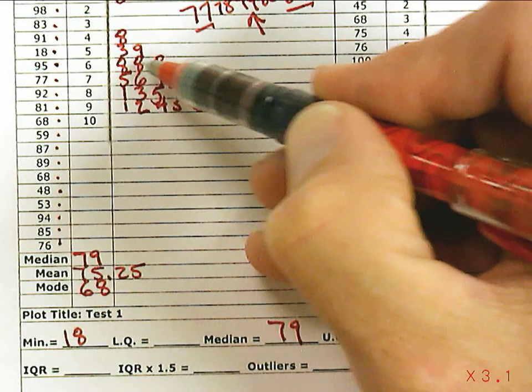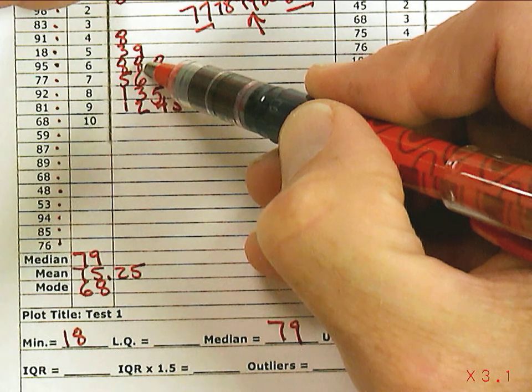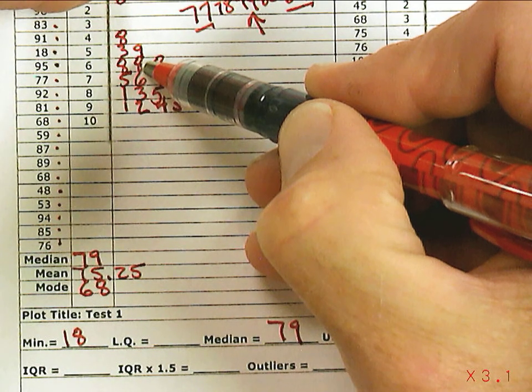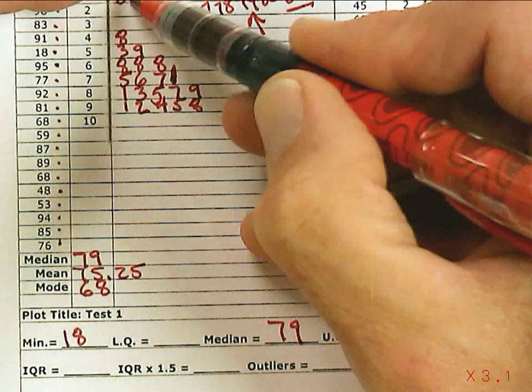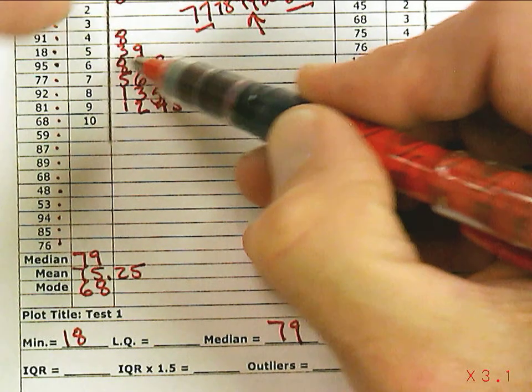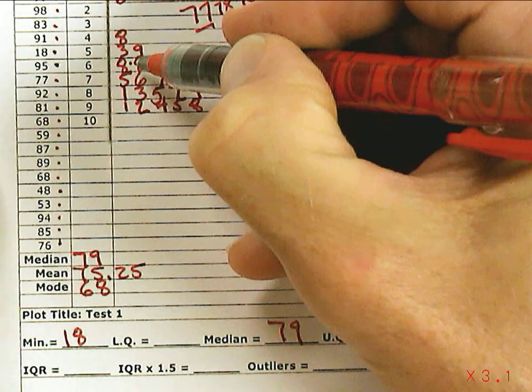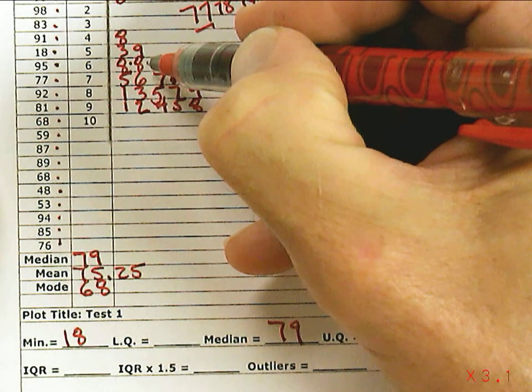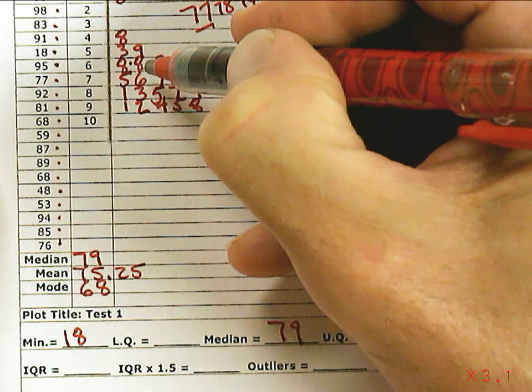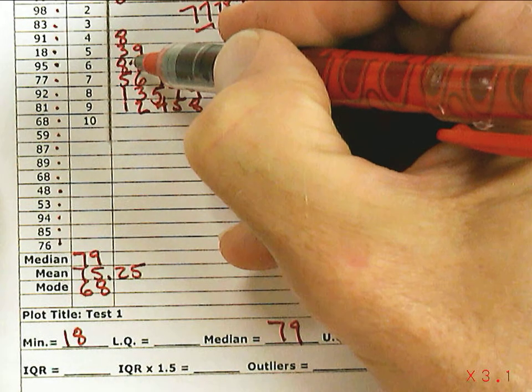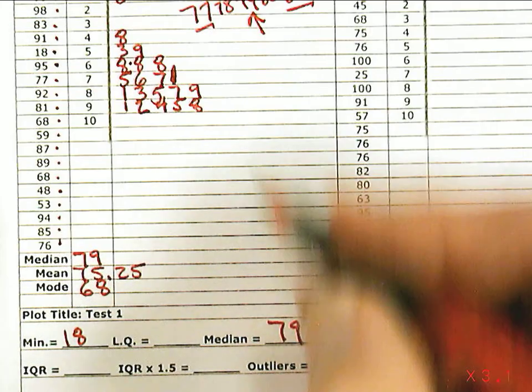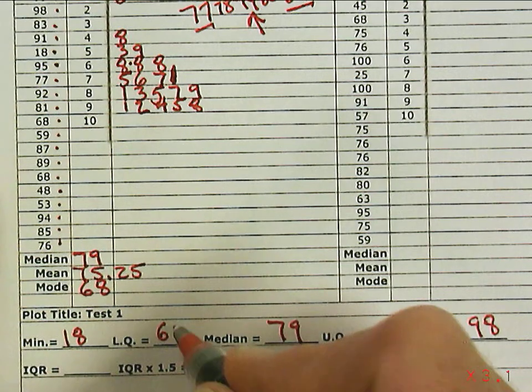Counting 1, 2, 3, 4, 5 in from the bottom half, 1, 2, 3, 4, 5 in from the bottom of that half means right there between those two numbers, between 68 and 68, is the lower quartile. Since it's the same number, I don't have to go between, I can just choose 68 as the lower quartile.